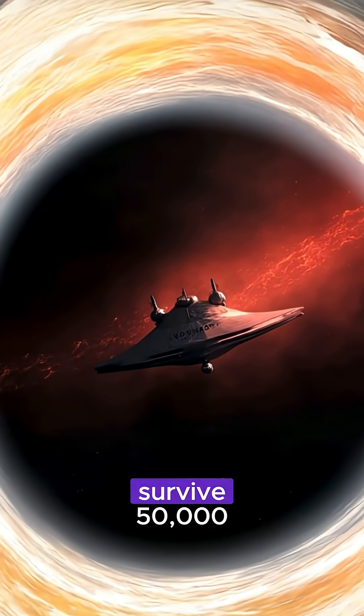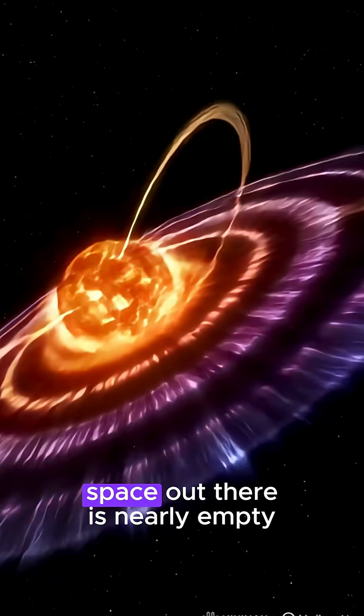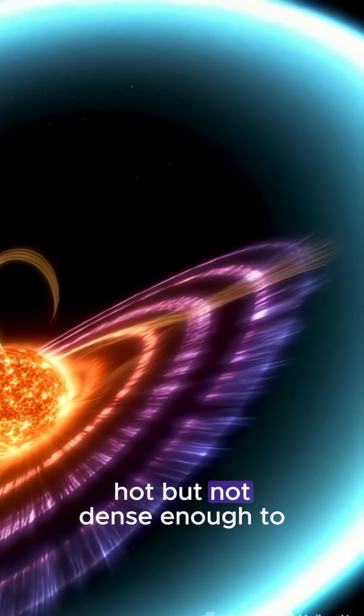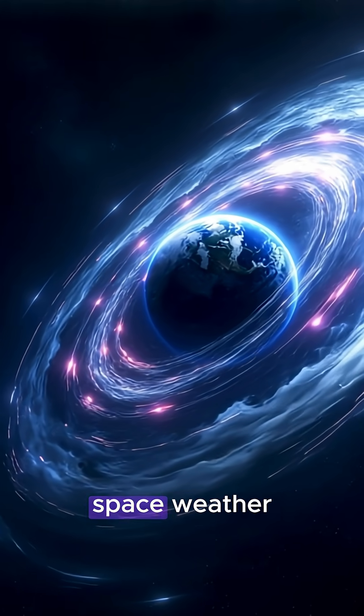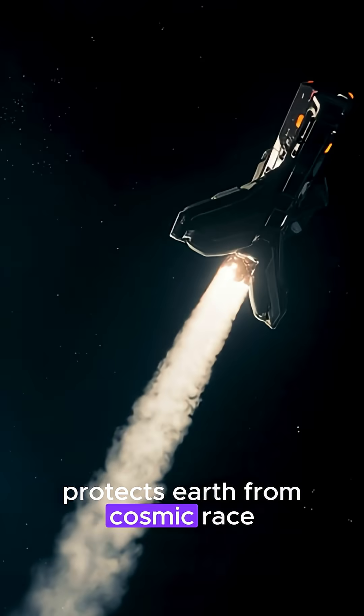So how did the spacecraft survive 50,000 Kelvin? Space out there is nearly empty, hot, but not dense enough to burn. Voyager's data is helping us map space weather and understand how our sun protects Earth from cosmic rays.